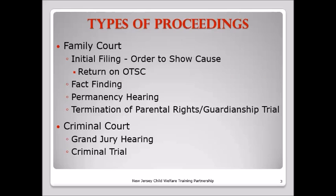Within the family court, you have what's known as the initial filing, also called the order to show cause. Once that's filed, you have the return on the order to show cause. Later on, there is the possibility of the fact-finding hearing and later on the permanency hearing. And in some cases, unfortunately, it may progress to termination of parental rights and a guardianship trial. Within the criminal courts, you have the grand jury hearing in New Jersey and if there's no resolution, the criminal trial.